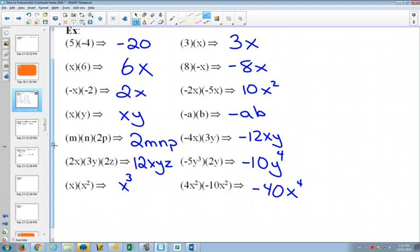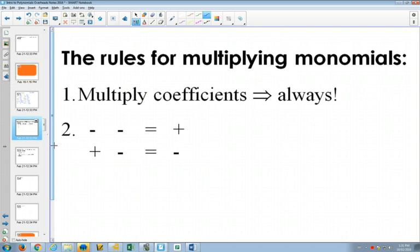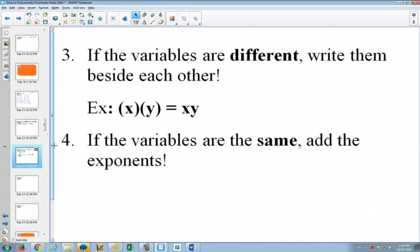Not so bad, right? So when we added and subtracted, we could only do that with like terms. But multiplying, it doesn't matter if they're like or not. You just multiply the coefficients and then multiply the variables together. So here's our rules for multiplication: we're going to always multiply our coefficients together, and we remember some of our rules, like a positive times a positive is positive, negative times a negative is positive, but a positive times a negative is negative.